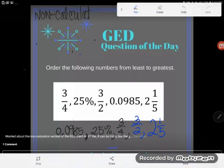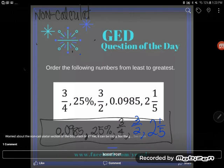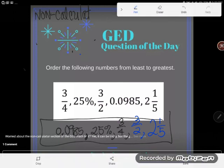So there is my final answer, y'all. That first, that tiny little decimals first, the one that was about nine cents, then 25%, three quarters, three halves, and two and one fifth. Great. If you have any questions about this, be sure to drop them in the comments.